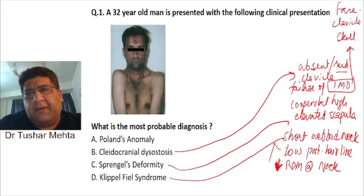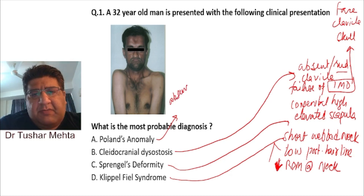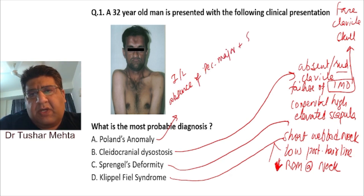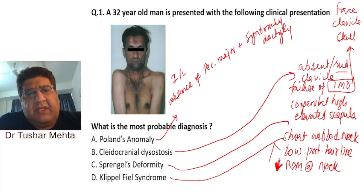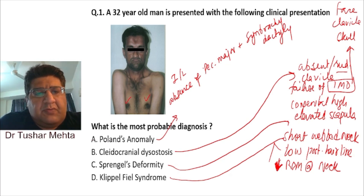Poland's anomaly is the absence of the pectoralis major muscle — specifically ipsilateral absence of the pectoralis major — plus syndactyly/brachydactyly. I don't think they have given me any photograph showing small fingers or fused fingers, and there's no disturbance shown in the chest either.